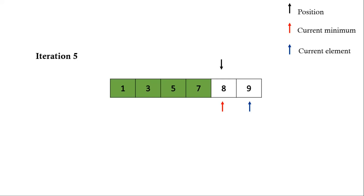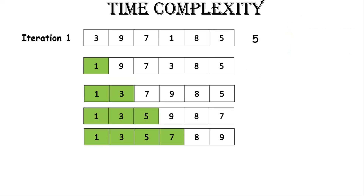9 is not less than 8, so current minimum remains at 8, and 8 is already in its right position — no swapping required. After iteration 5, only one element is left. This completes the process of selection sort — how we sort an unsorted array. Next is the complexity analysis of selection sort.